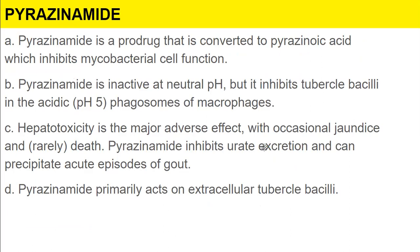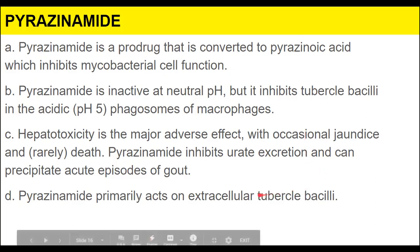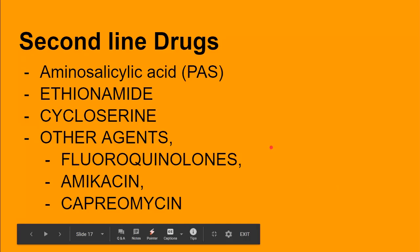Pyrazinamide is a prodrug that is converted into pyrazinoic acid, which inhibits mycobacterial function. Pyrazinamide is inactive at neutral pH but is active in the acidic pH 5 phagosomes of macrophages — it acts on extracellular acid tubercle bacilli. Hepatotoxicity is a major adverse effect with occasional jaundice and rarely death. It also inhibits urate excretion and can precipitate gout.